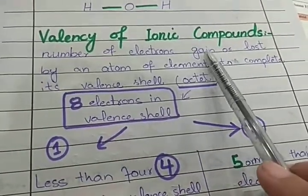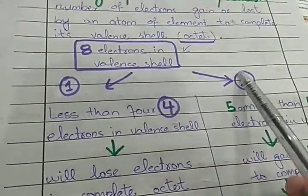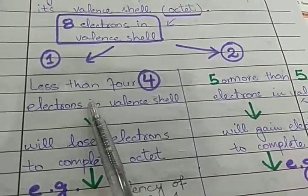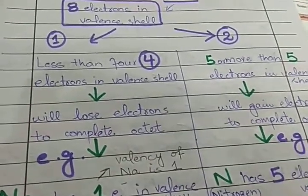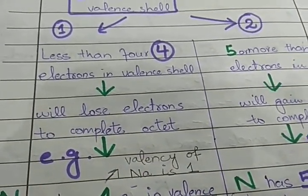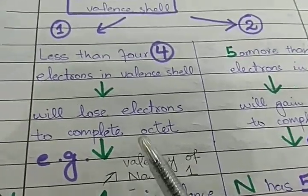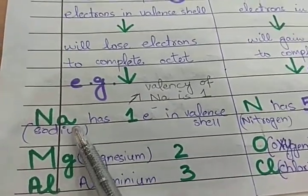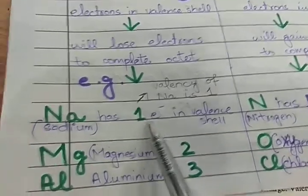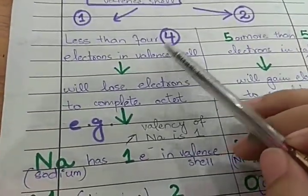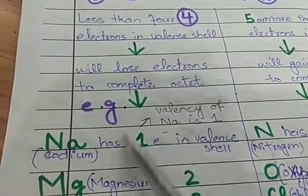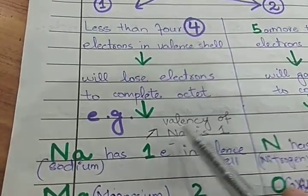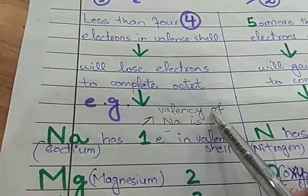There are two possibilities. First: if the valence shell has less than 4 electrons, the atom will lose electrons to complete its octet. For example, Sodium has 1 electron in its outermost shell — less than 4 — so it will lose that 1 electron. Its valency is therefore 1. Magnesium has 2 electrons in the valence shell — less than 4 — so it will lose 2 electrons, giving a valency of 2.